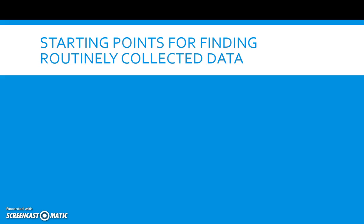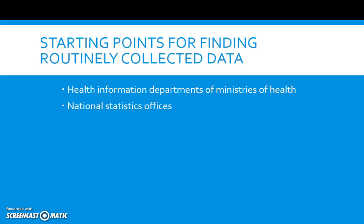Where do you start when trying to find routinely collected data? Health information departments of ministries of health will often collect this data and may make it available through printed or web reports. National statistics offices will often provide demographic data from either a census, or if these take place rarely, from population estimates. Local health authorities will be able to contextualize national patterns within their local health constituency.